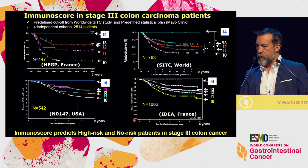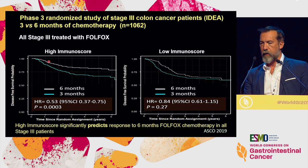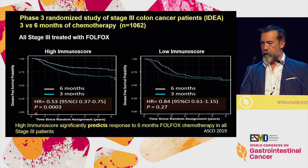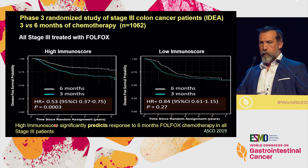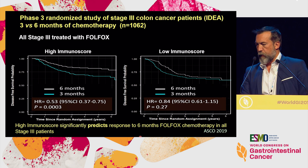Moving to the predictive value of immunoscore: IDEA was comparing three-month to six-month chemotherapy. Looking at high immunoscore patients — 1,062 FOLFOX-treated patients from the French study — very significantly (p=0.0003), six-month chemotherapy is beneficial compared to three-month chemotherapy in patients with a high immunoscore, meaning you need pre-existing immunity to respond to longer chemotherapy. In contrast, patients with a low immunoscore absolutely do not benefit (p=0.27) from six-month chemotherapy. Immunoscore significantly predicts response to six-month FOLFOX in all stage 3 patients.